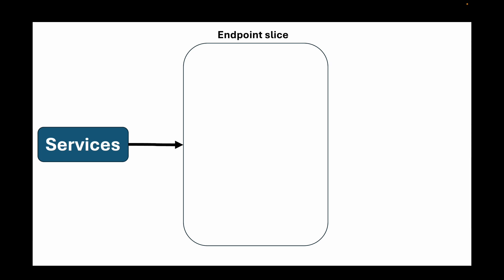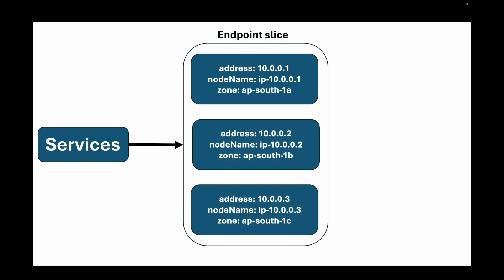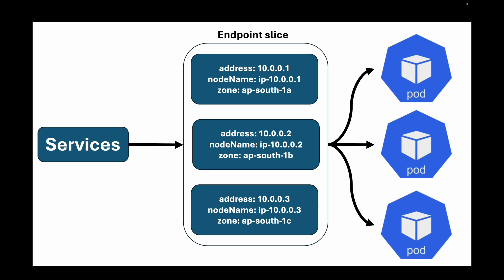What about the continuously changing list of pod IP addresses? When a service is created, resources known as endpoint slices are automatically created in the background. Each endpoint slice has a list or table of endpoints containing a subset of pod addresses along with the nodes where the pods are running. Services track this list and constantly have updated information on pod IPs so they can send traffic to the respective pods even as IPs change.